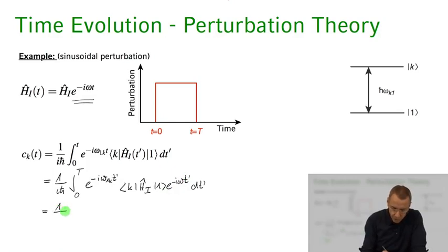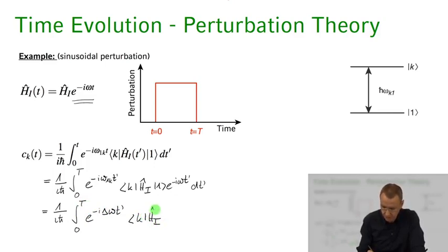And so now let's pull the exponentials together and what we get is the following 1 over i h bar integral from 0 to capital T e to the minus i delta omega t prime k H i 1 dt prime.